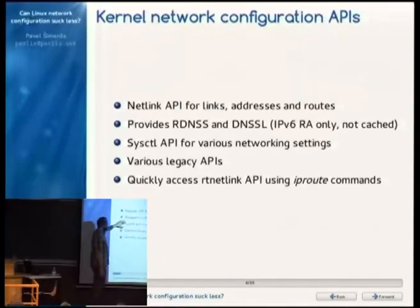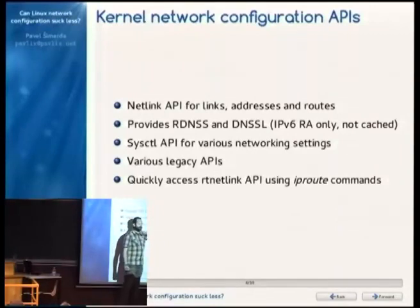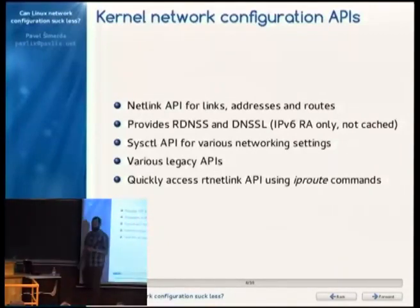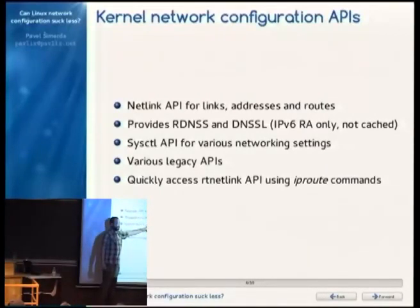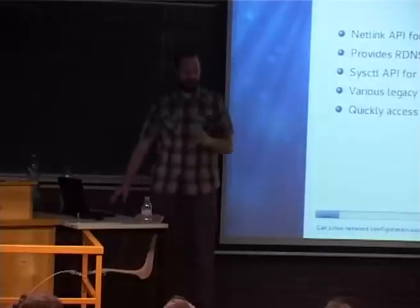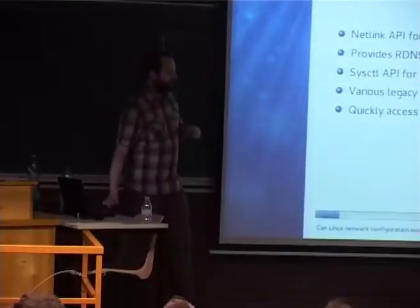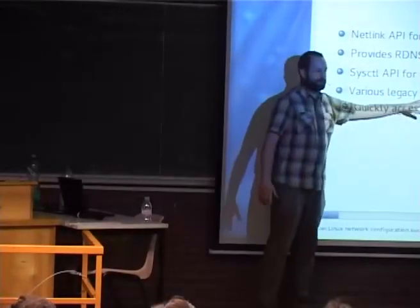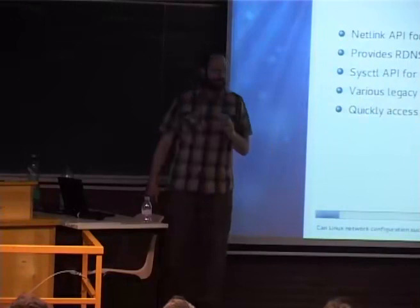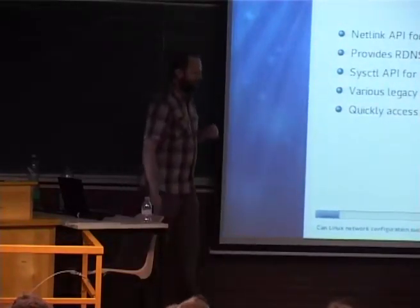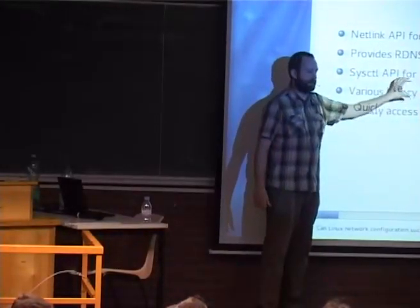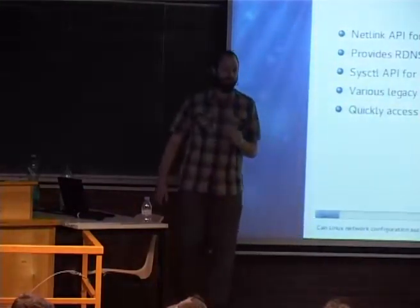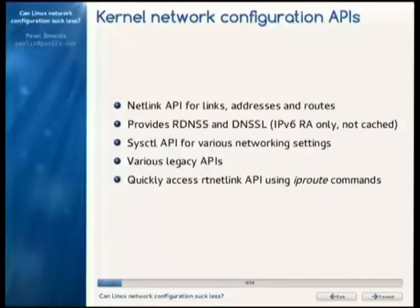The kernel also provides a recursive DNS server list and DNS search list — stuff you usually push to /etc/resolv.conf. But this is currently pretty limited and doesn't work as expected. There are also various legacy APIs such as ioctl controls that various tools still use, and using these old APIs can result in different behavior, so it's best to use current tools for testing.